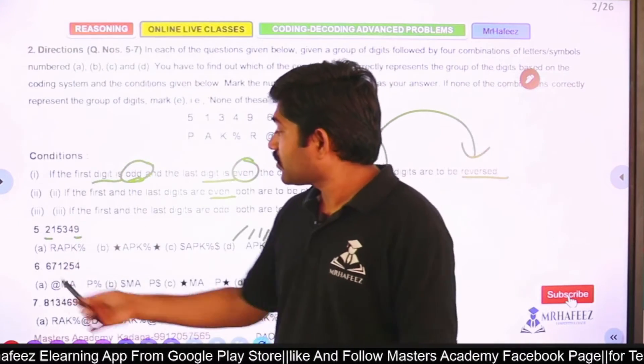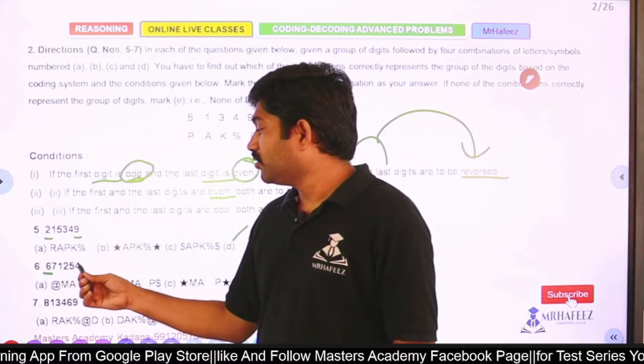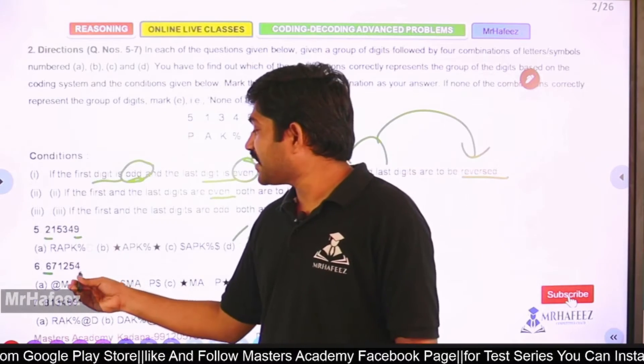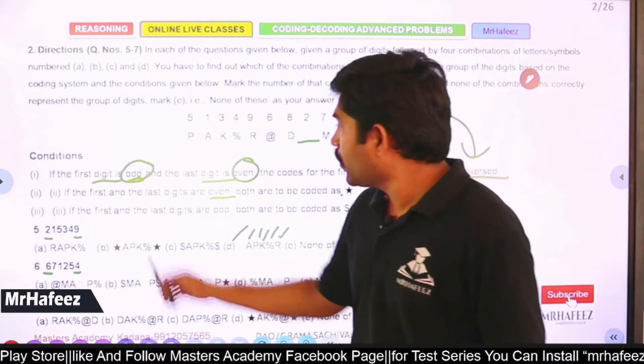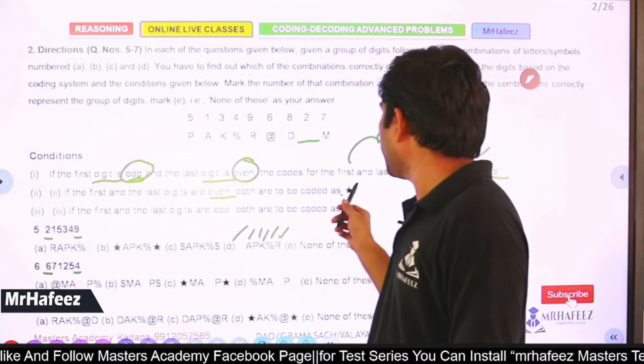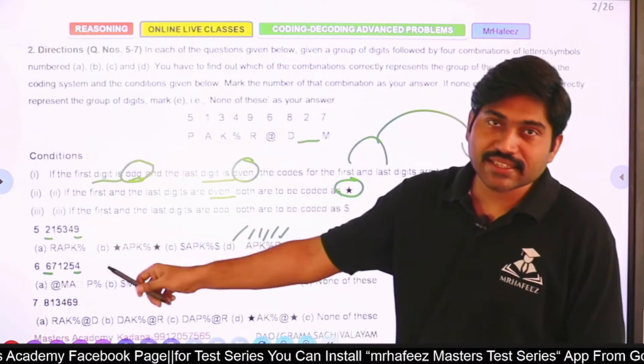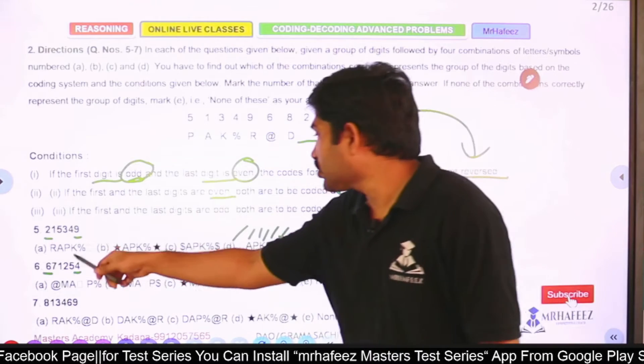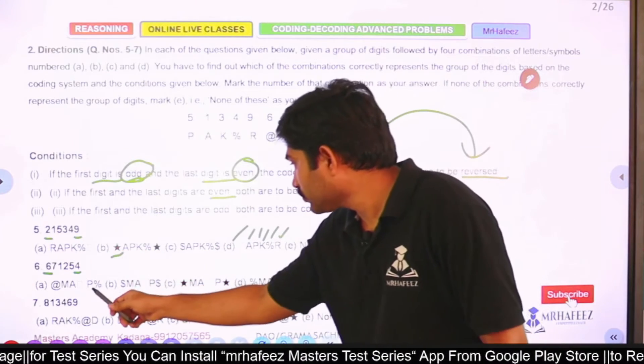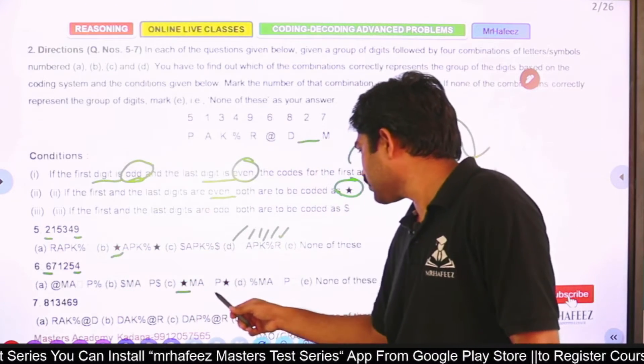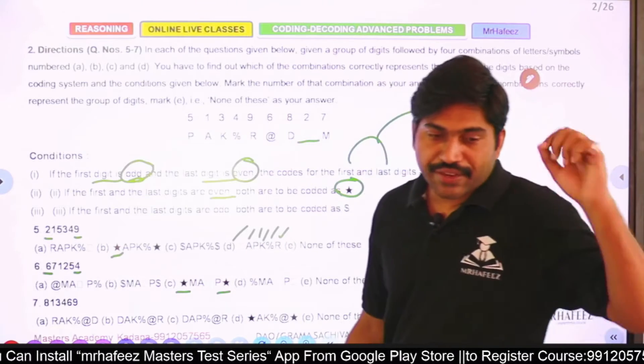6, 7, 1, 2, 5, 4. 6 and 4 are both even numbers. Both even numbers means what should we do? Both coded as star. First digit and last digit have to be coded as star. Where are the two stars? One? No. Stars. Yes.